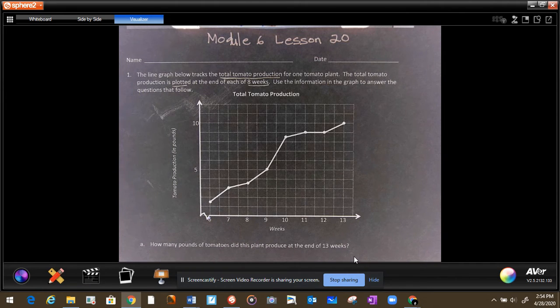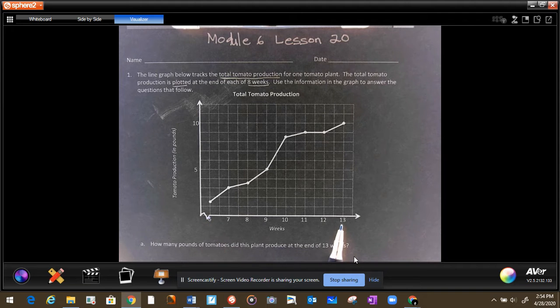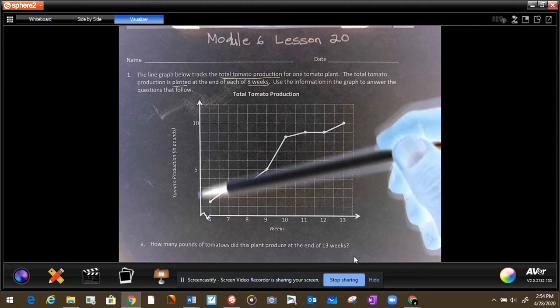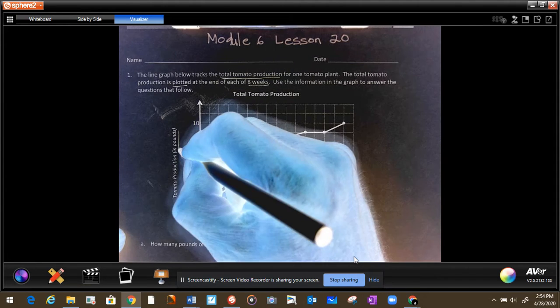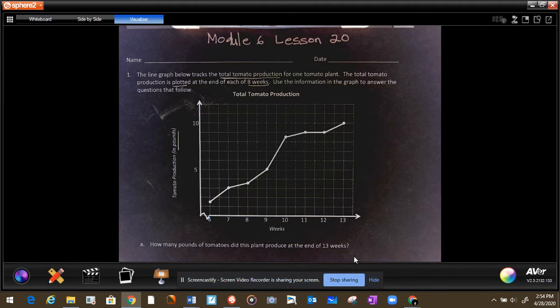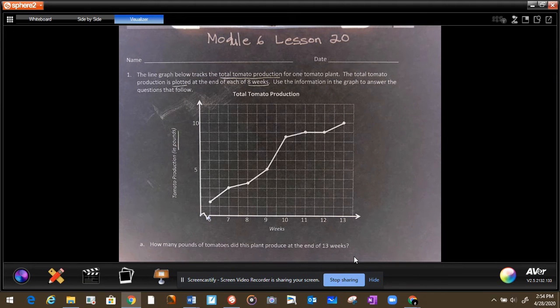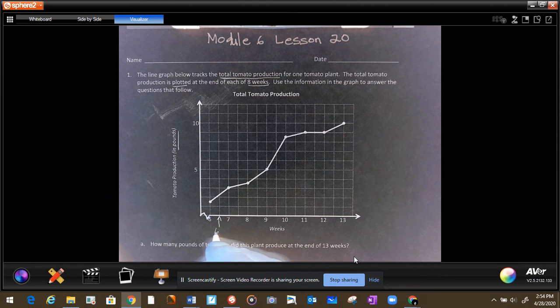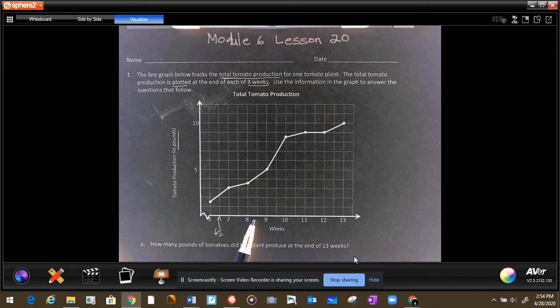Now let's look at the information quickly. These are weeks from 6 to 13 weeks they plotted this tomato production. And this is how many tomatoes in pounds, how much was produced. Now if we look at the graph from week 6 to 7, let's look at one more thing. Every two squares is one unit. So this will be half, this will be 6.5. Make sure you understand that. It's always important to understand the scale.